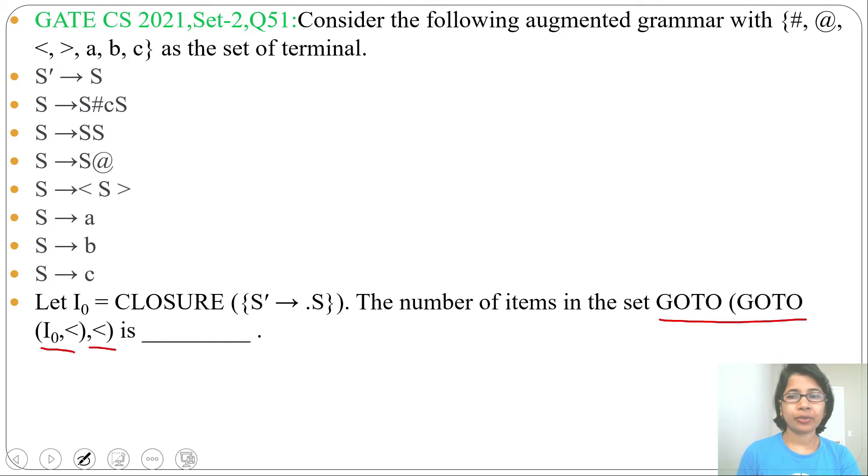For that we need to construct the LR0 automata. The initial state will contain closure of the augmented production S' derives dot S. There is a dot before S, so we need to add the S productions as closure of it.